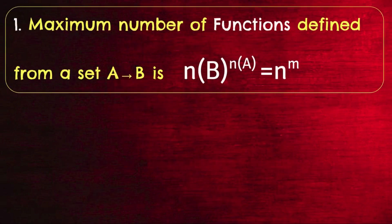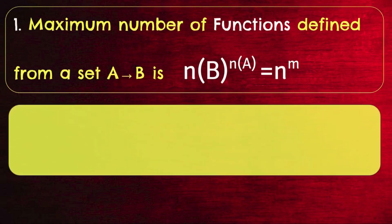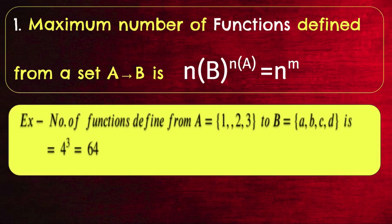The maximum number of functions defined from a set A to set B is N(B) raised to N(A). Remember: N(B) raised to N(A). For example, the number of functions defined from A = {A, B, C, D} — it is N(B) raised to N(A). The result is N(B) raised to N(A), or N raised to M.